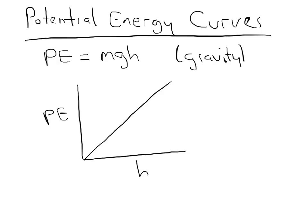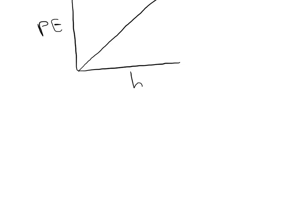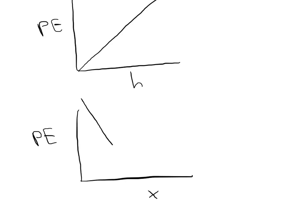However, what if you have something else that doesn't behave like this? For example, if you have a molecular bond, it's entirely possible that if you have some sort of intermolecular bond, the potential energy between the two objects looks more like a strange curve where as you change the distance between the two objects, the potential energy first goes down, then it goes back up.